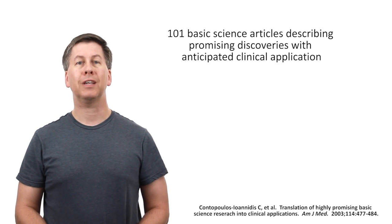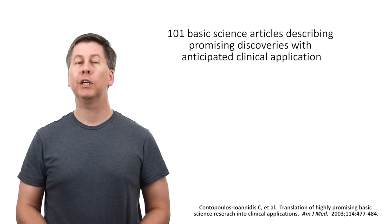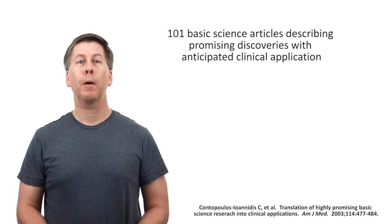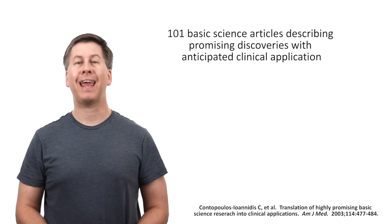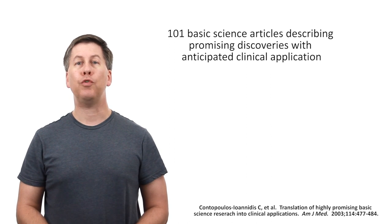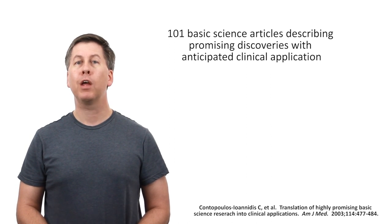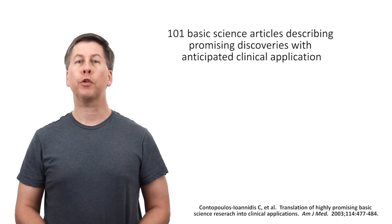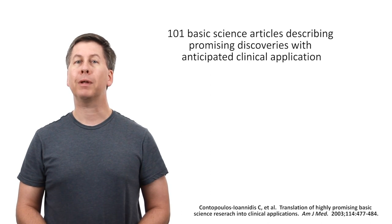A second piece of evidence that most published medical research is wrong. A 2003 review that identified 101 articles in major basic science journals such as Nature and Science published between 1979 and 1983. Each of these articles discussed a new basic science discovery that claimed to have a future clinical therapeutic or preventative application.